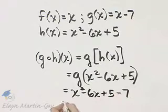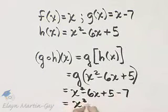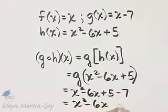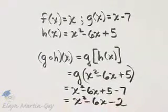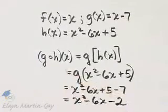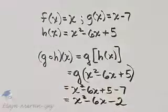And then we will simplify this. That is x squared minus 6x, and then 5 minus 7 is minus 2. So g of h of x is this function.